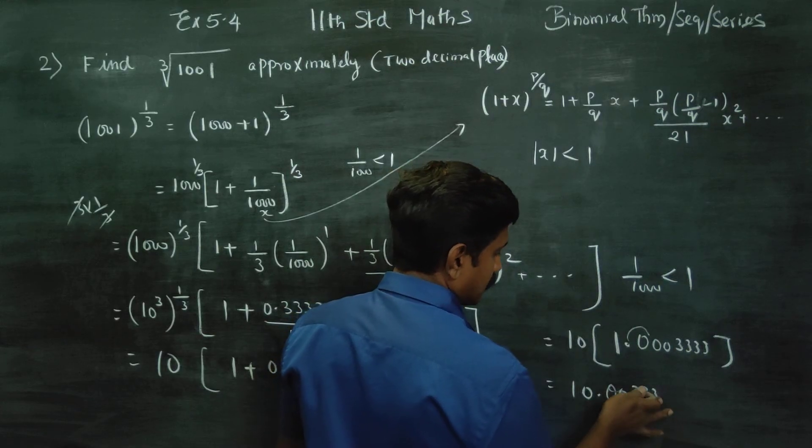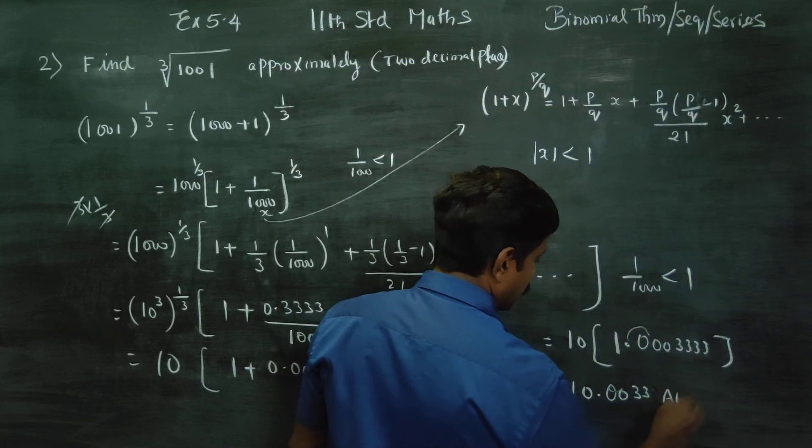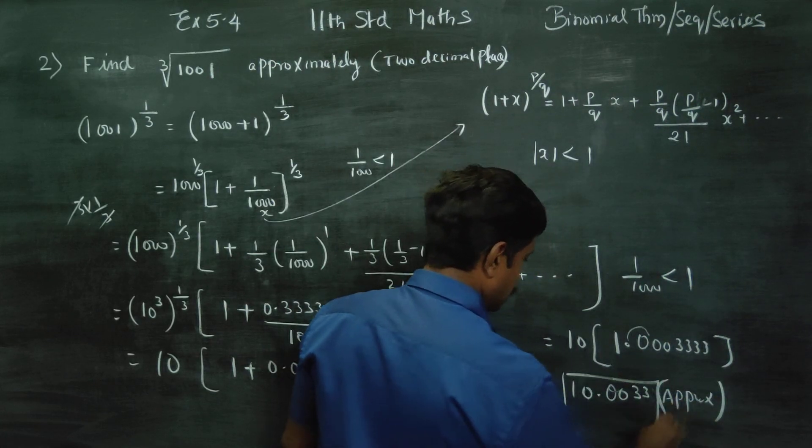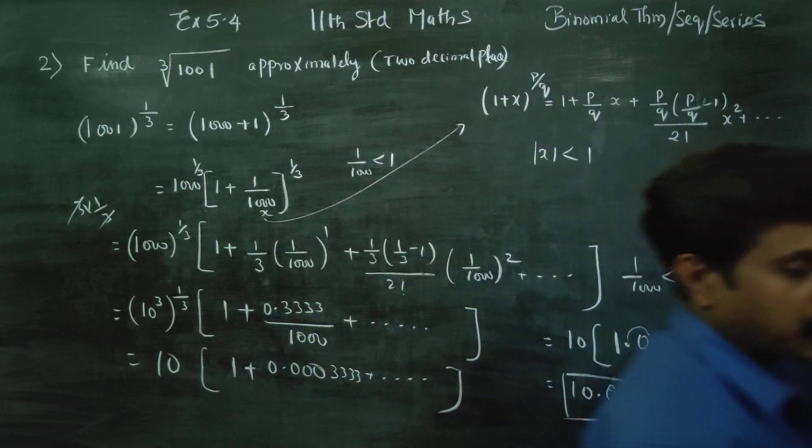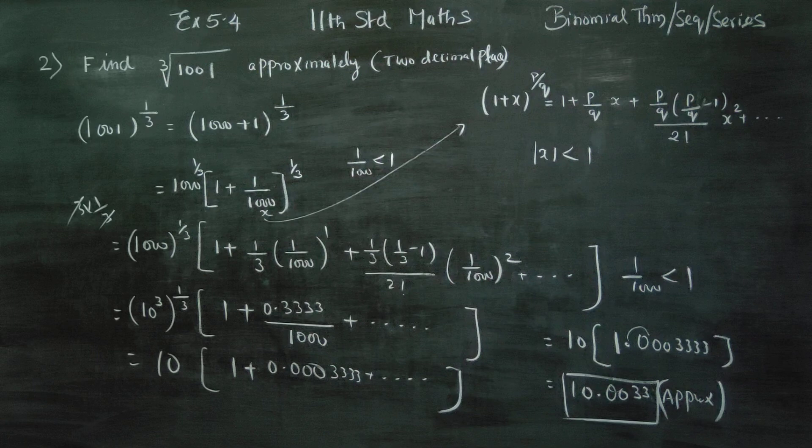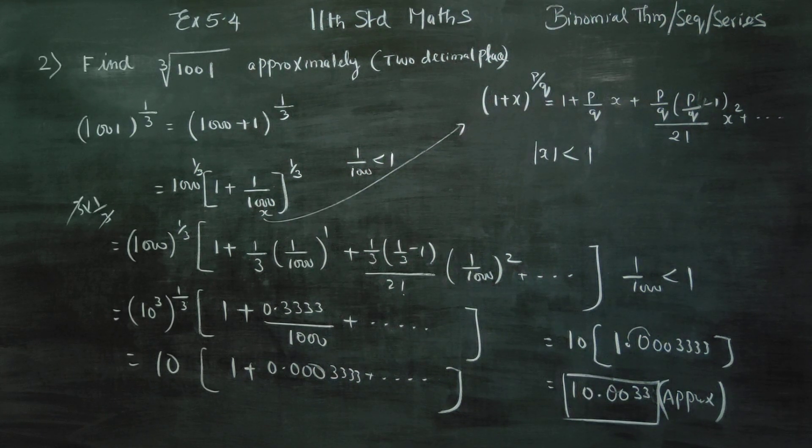Then, 2 digits: approximately 10.00333. We have to create a bracket, close it. Maximum decimal places. Thank you. See you next time.